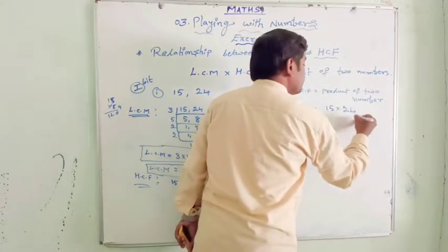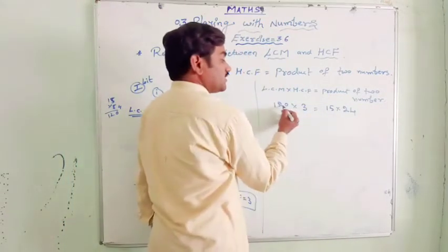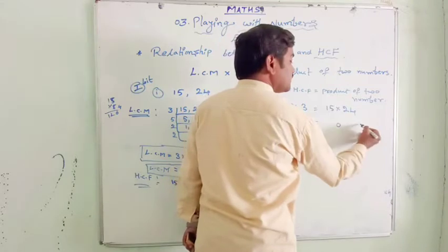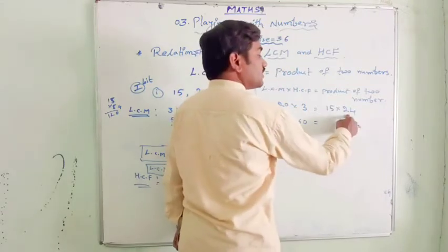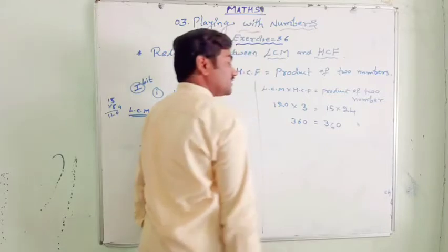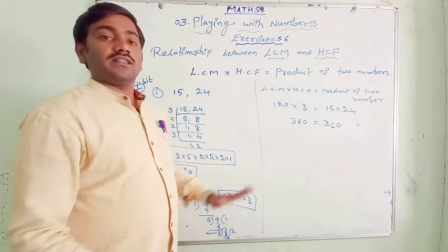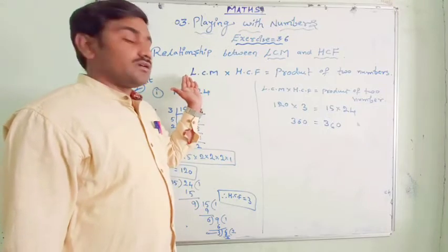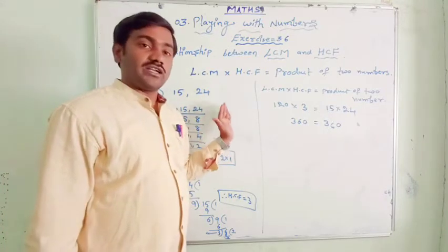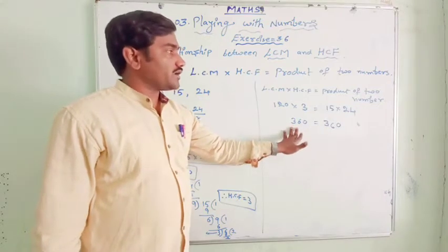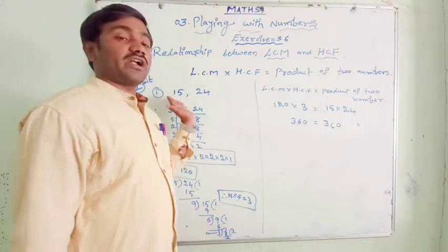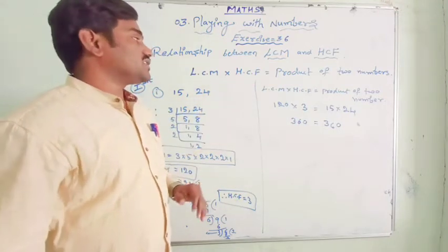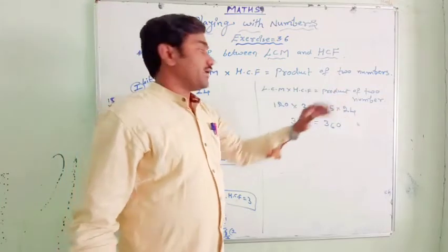So: LCM × HCF = 120 × 3 = 360. And the product of the two numbers: 15 × 24 = 360. LHS equals RHS. That means this statement is true. LCM of two numbers multiplied by the HCF of two numbers gives the same answer as the product of the two given numbers. So this is the relation: LCM × HCF = product of two given numbers.